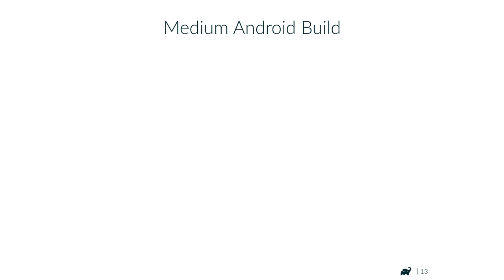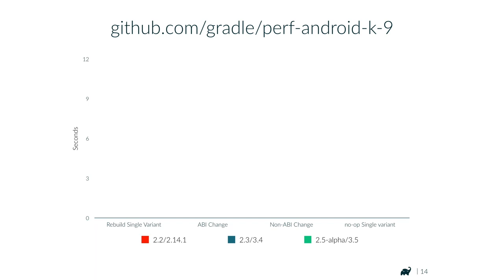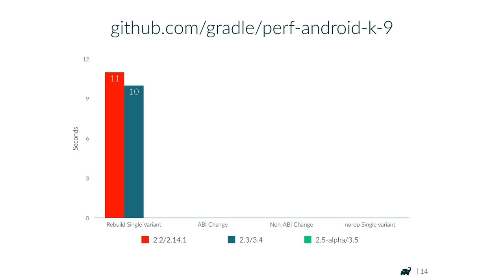Let's look at a different build that probably reflects the reality of quite a few Android teams. It's the K9 email client for Android, available on GitHub. It has four modules with most code living in one module, and it does not use annotation processors. For a full rebuild of a single variant: 11 seconds with 2.2, 10 seconds with 2.3, and 8 seconds with 2.5 alpha. One reason things aren't much faster is that parallelization is not very effective in projects with a small number of modules where one module is large.